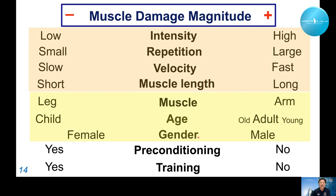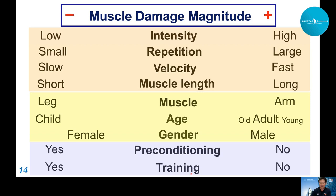Gender differences also exist — males typically have more damage than females because estrogen protects the muscle membrane. Also, preconditioning or prior eccentric training results in much less damage compared to those without prior training.